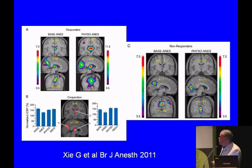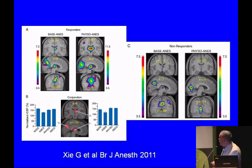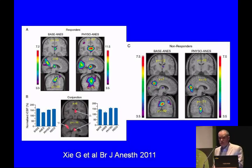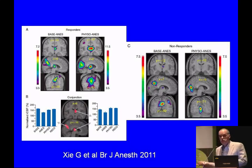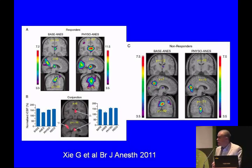We concluded that changes affecting the thalamus and precuneus appear to be functionally related to the level of consciousness. It's still not possible to determine whether this is cause or consequence, but it establishes a stronger functional relationship. Given the known role of the thalamus in arousal and maintenance of consciousness, we think that activation of the thalamus probably contributed to the return of consciousness.